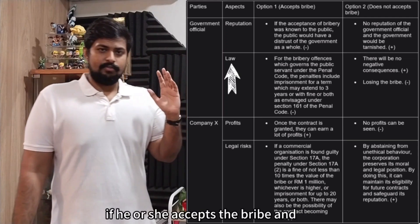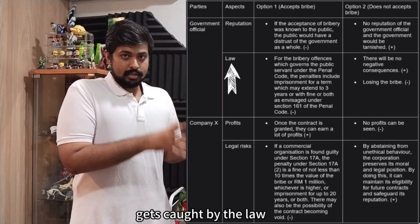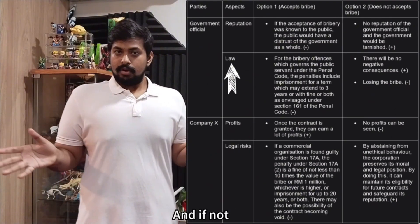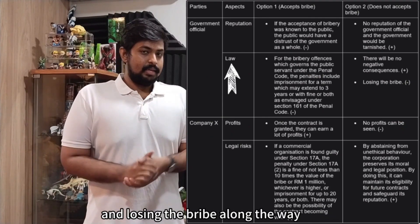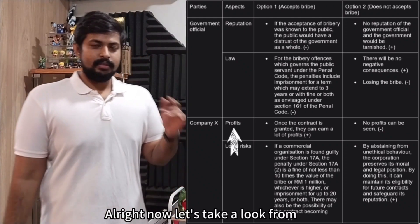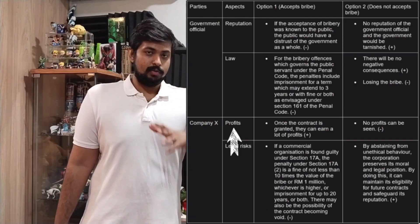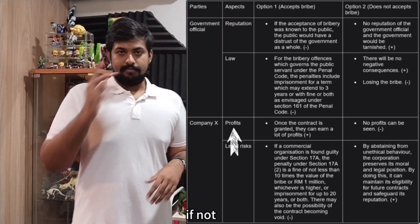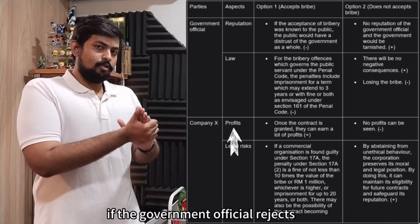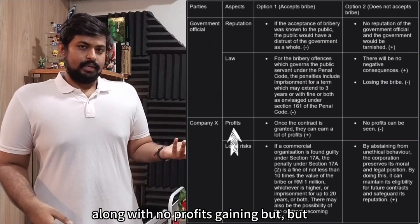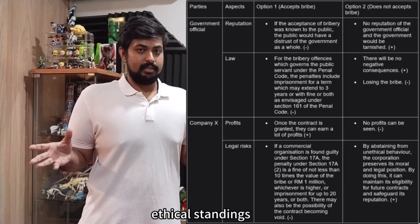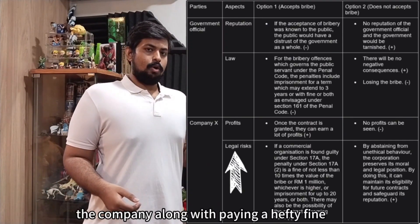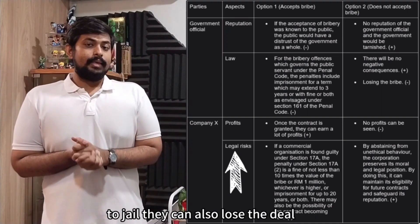Through the eyes of the law, if the official accepts the bribe and gets caught, they could end up in jail or pay a hefty fine exceeding the bribe itself. From Company X's perspective, accepting the bribe and granting the deal yields large profits, but if caught, the company faces a hefty fine, jail time, and loss of the deal. Rejecting the bribe means no profits, but the company upholds its ethical standing and can find better deals ethically.